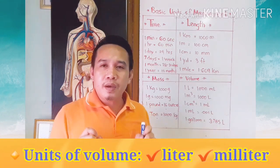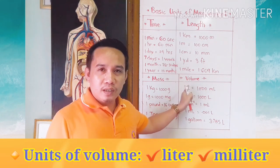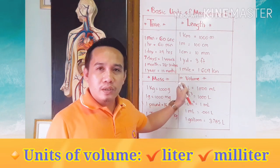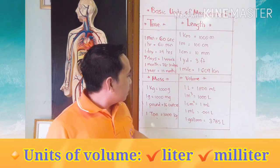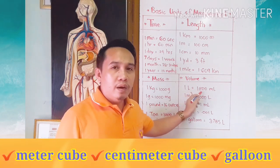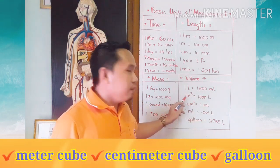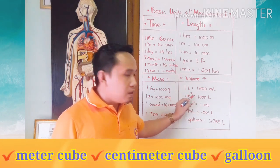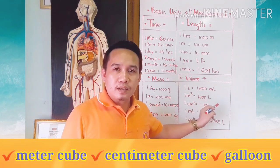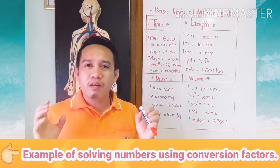Another measuring unit is volume. The indicators and units are: 1 liter is equal to 1,000 milliliters; and 1 cubic meter is equal to 1,000 liters.